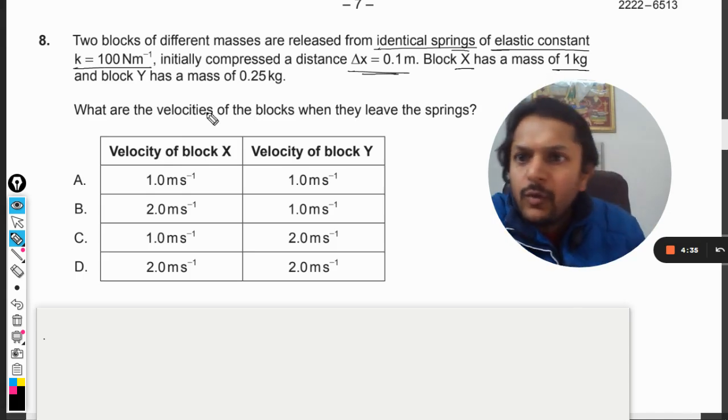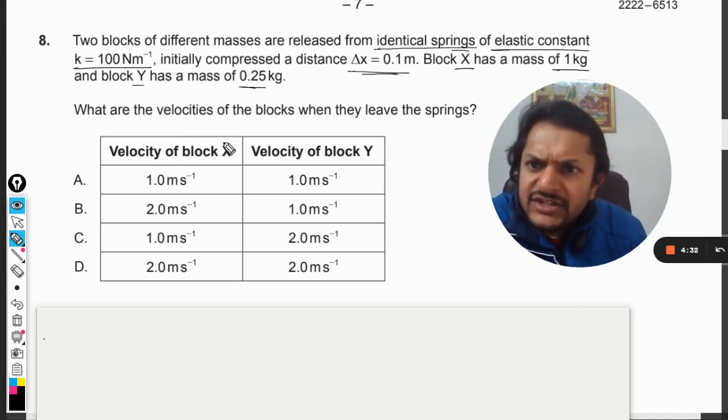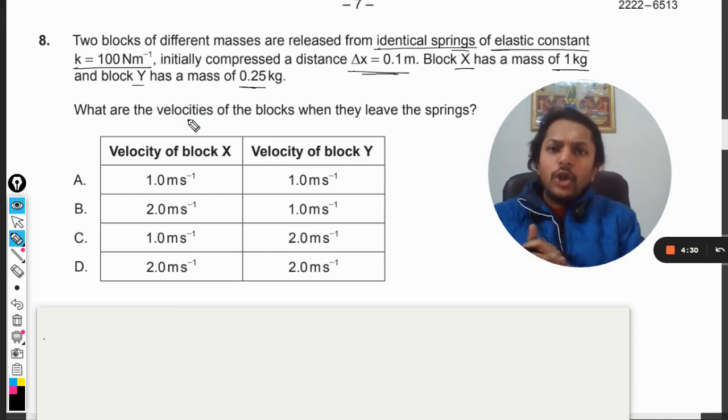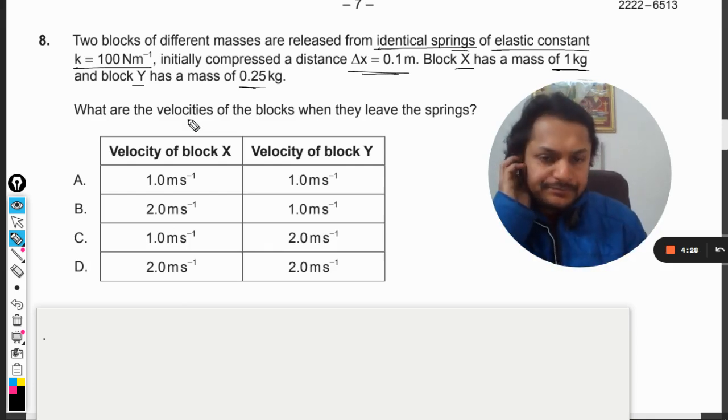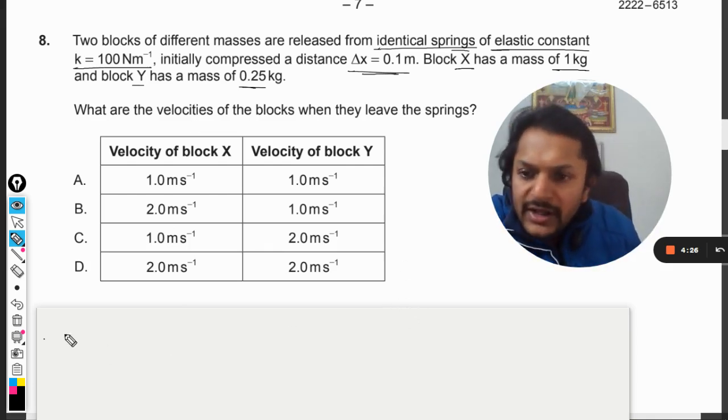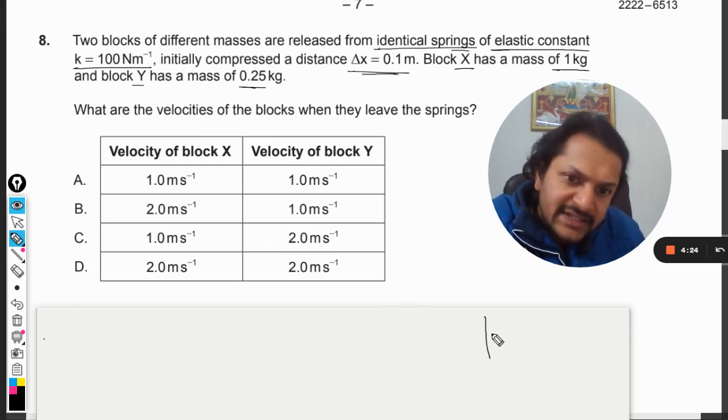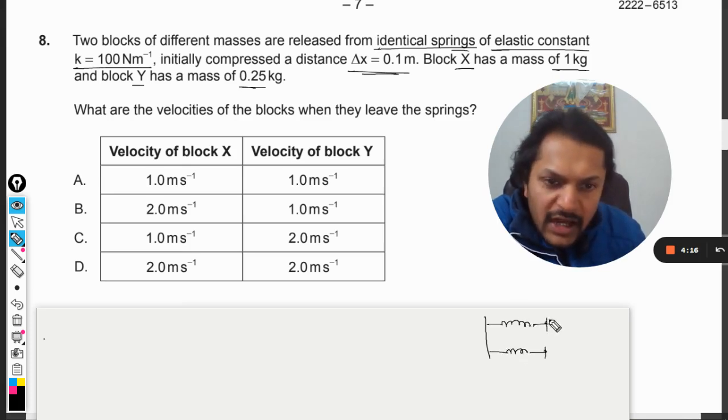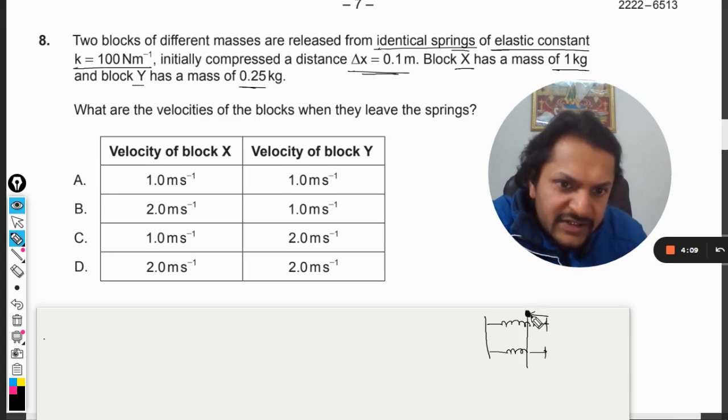Block X has a mass of 1 kg, Block Y has a mass of 0.25 kg. What are the velocities of the blocks when they leave the spring? The situation is like this: there is one spring and another spring, and both of them are compressed first to the same level. There is this mass, they leave it, and then this mass attains kinetic energy.